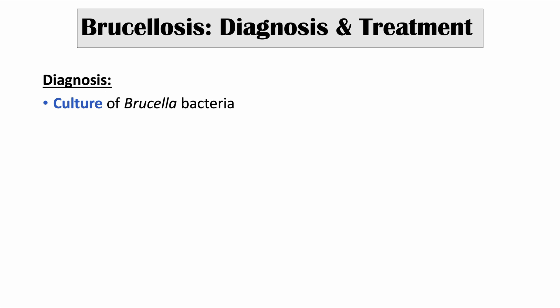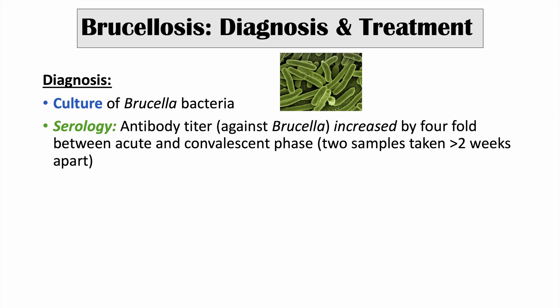Clinicians diagnose brucellosis by culturing the Brucella bacteria or through serology — measuring antibody titers against Brucella. A fourfold increase in antibody titer between the acute and convalescent phase is a clinical indicator for diagnosis. Usually two samples are taken greater than two weeks apart.